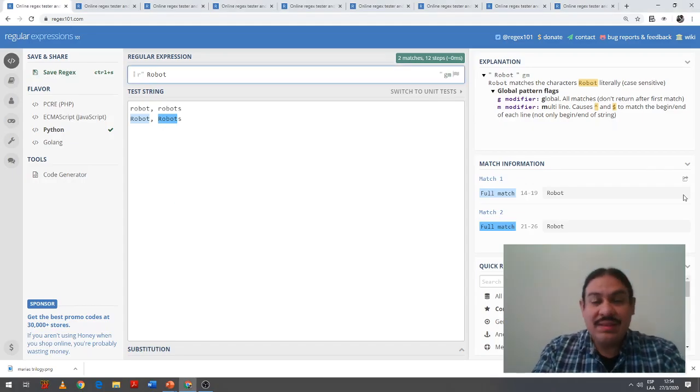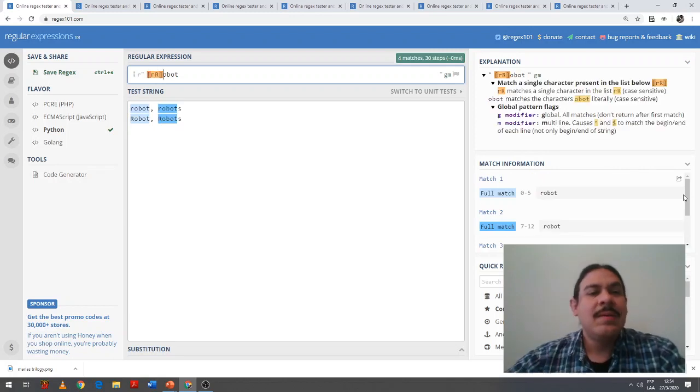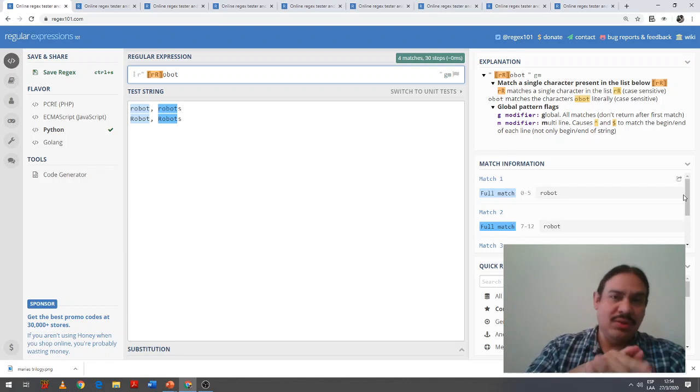If you give it the same string that we had and do this, it's going to find one character from the list of lowercase R, uppercase R, and then literally O-B-O-T, all lowercase. So this finds all four cases of robot within our text.